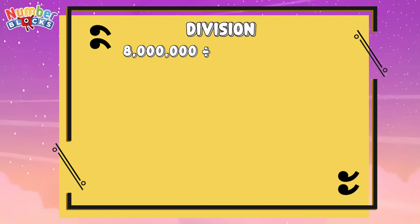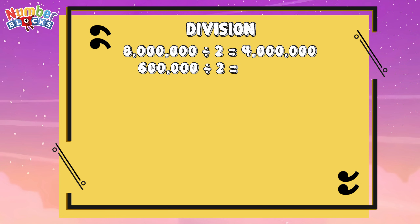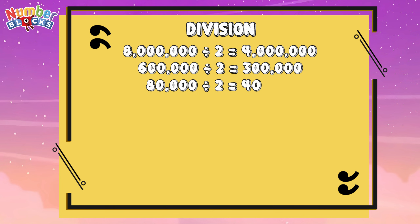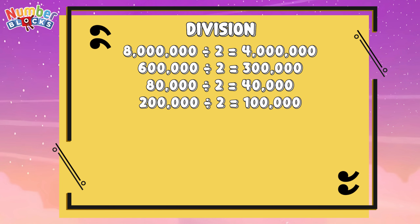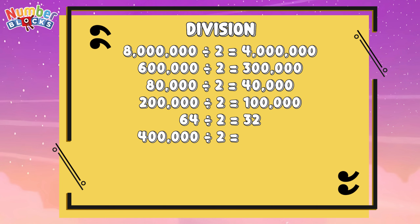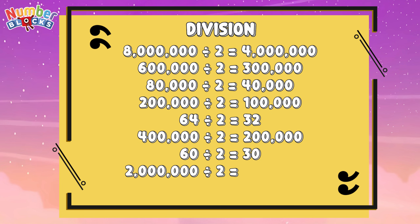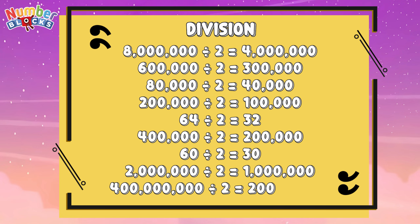8,000,000 divided by 2 is equals to 4,000,000. 600,000 divided by 2 is equals to 300,000. 80,000 divided by 2 is equals to 40,000. 200,000 divided by 2 is equals to 100,000. 64 divided by 2 is equals to 32. 400,000 divided by 2 is equals to 200,000. 60 divided by 2 is equals to 30. 2,000,000 divided by 2 is equals to 1,000,000. 400,000,000 divided by 2 is equals to 200,000,000.